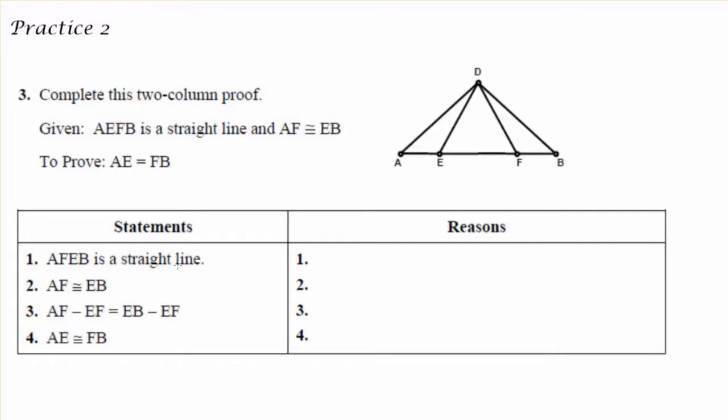In completing this two-column proof, I am told that AEFB is a straight line and that AF is equal to EB. So to say that AEFB is a straight line with my first statement, the reason would be given. With my second statement, AF is equal to EB, again another given statement.